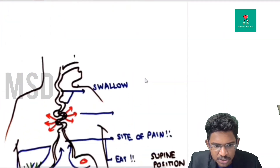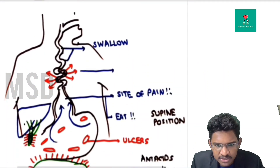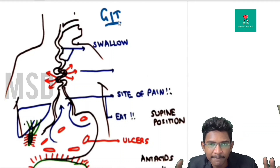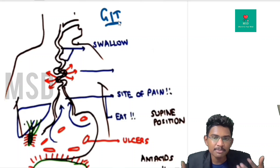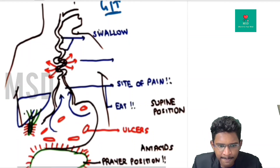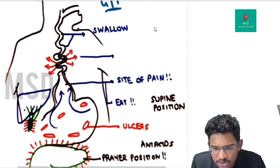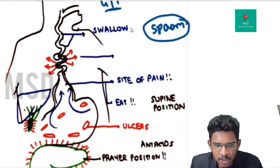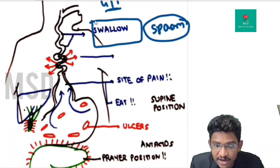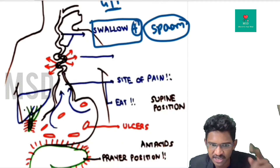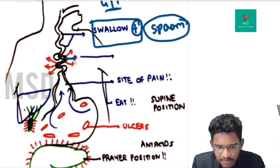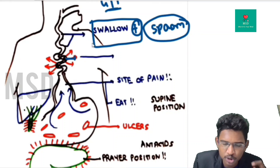Gastrointestinal causes of chest pain are important because many cardiac pains may originate from the epigastrium. Esophageal spasm disorders — such as nutcracker esophagus — have a characteristic feature: asking the patient to swallow reproduces the pain. That is a good differentiating feature.